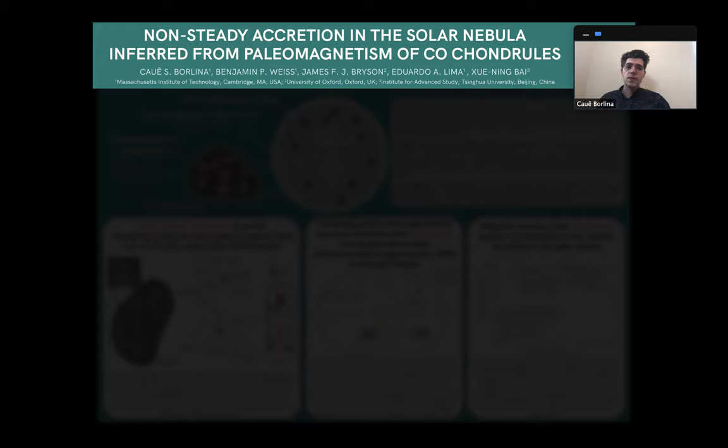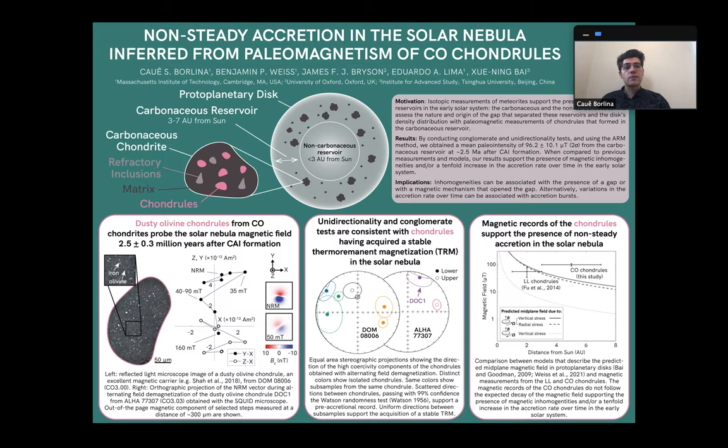Hi everyone, my name is Karel Borlina. I'm a graduate student at MIT, and today I'm going to talk about work I've been doing with paleomagnetic measurements of CO chondrules and the implications of our work to the evolution of the early solar system. So to get started, here's an overview of my poster. I'm going to be zooming in to specific areas to talk about it.